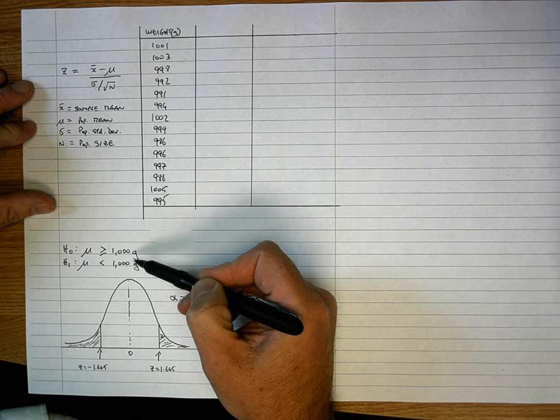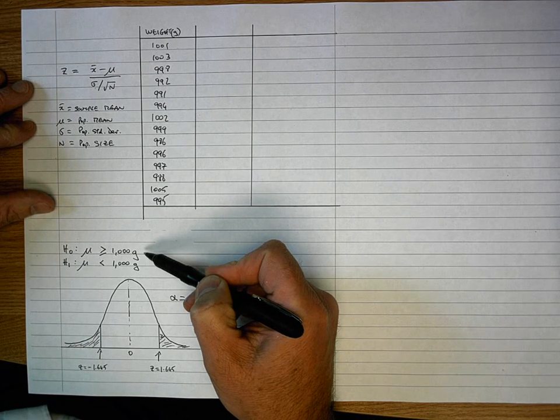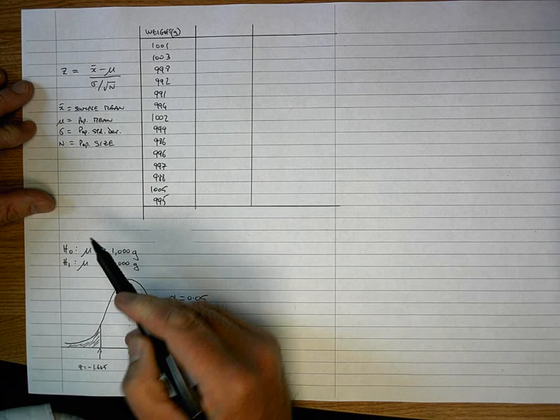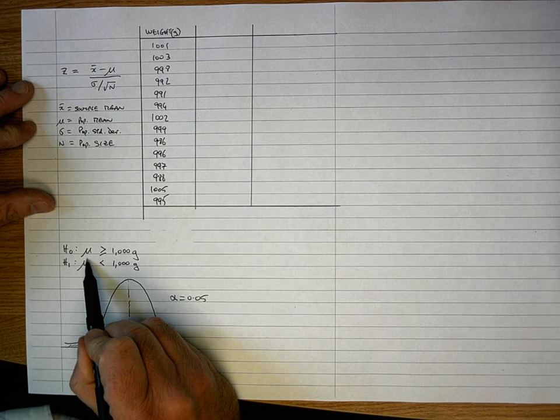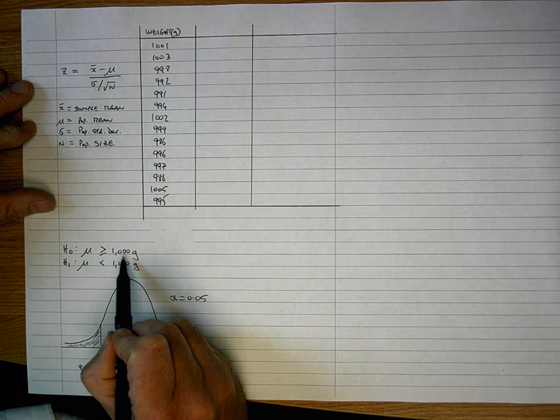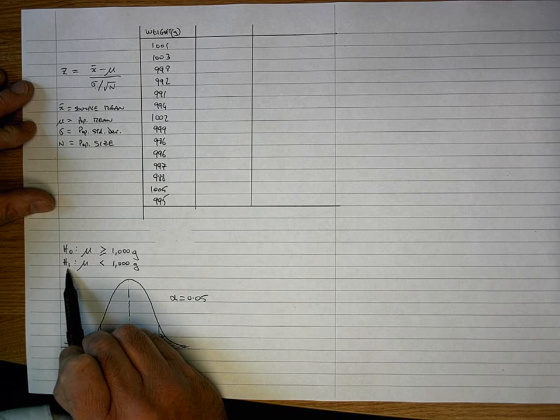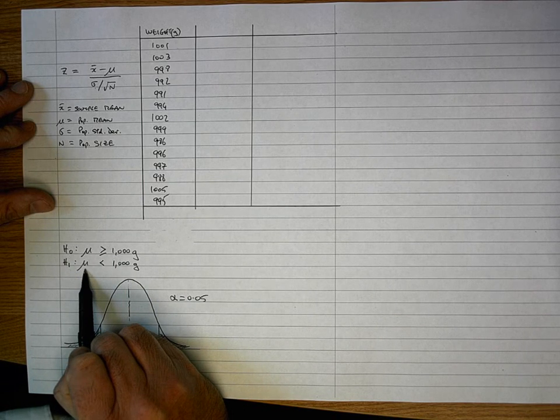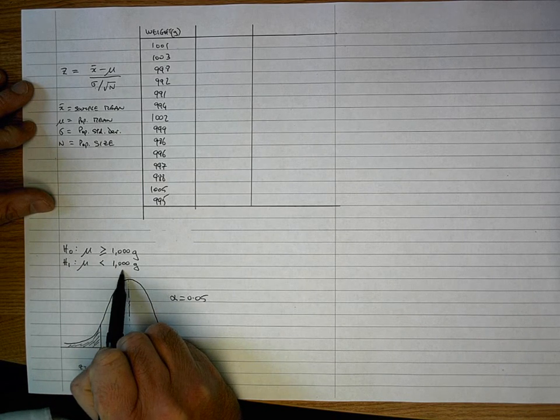So first off, let's specify our null and alternative hypothesis. My null hypothesis, H0, is that mu, the population mean, is greater than or equal to 1,000 as claimed by the manufacturer. And the alternative hypothesis, the one that I'm testing, H1, is that mu, the population mean, is less than 1,000g.